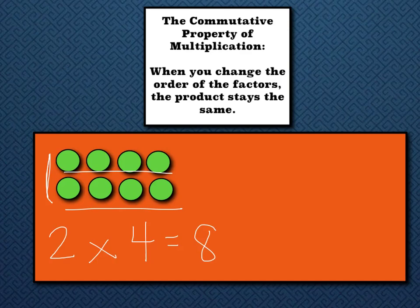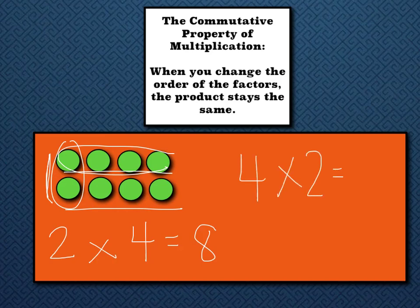But you can also write it another way. You can look at this array and say, that's four in each row and two rows, so we can say it's also four times two. Does that change how many circles I have in my array? No, I still have eight. So two times four is equal to eight, and four times two is equal to eight. That's just an example of the commutative property.